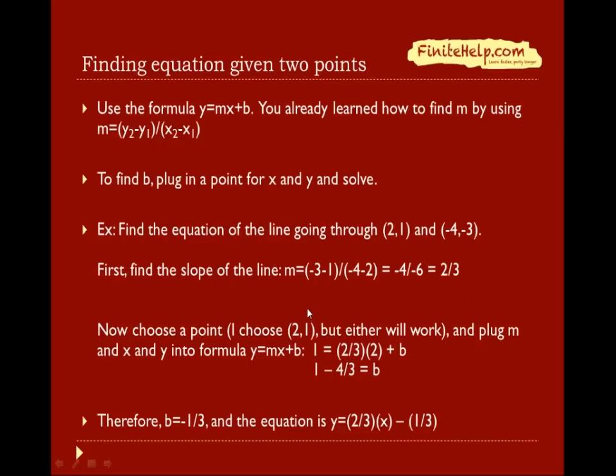This next part, we're going to try to find the b, which we're going to select one of these two points and then plug it in for x and y. I'm going to choose the point (2,1) here, but either one will work. I'm going to plug m in and x in and y in to the formula y equals mx plus b. Here, y is 1, m is 2 thirds, and x is 2. And b is what we're trying to solve for. Therefore, we have b equals negative 1 third. And the equation is simply y equals 2 thirds x minus 1 third.